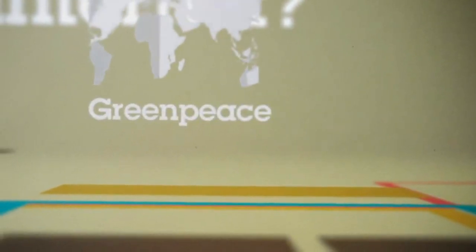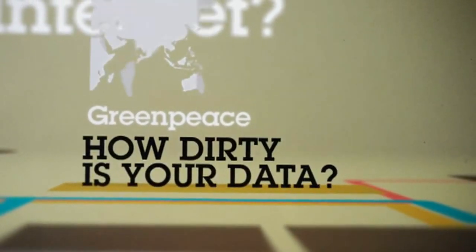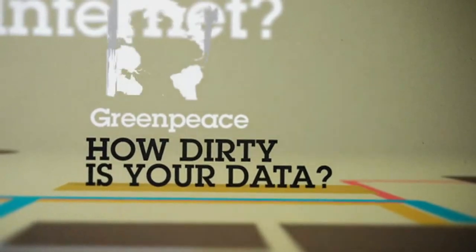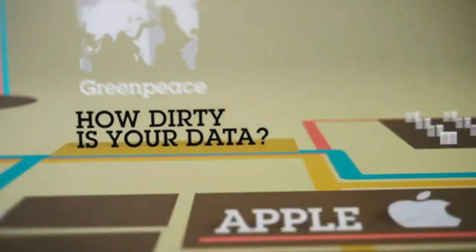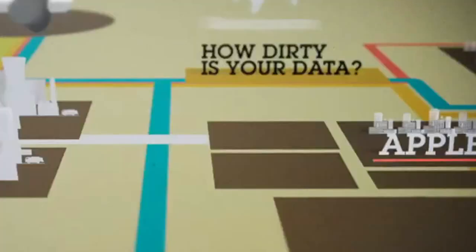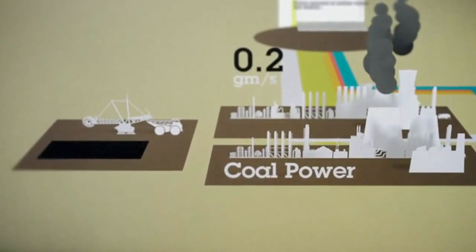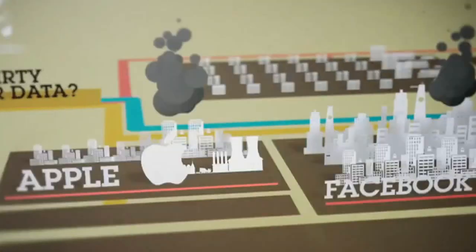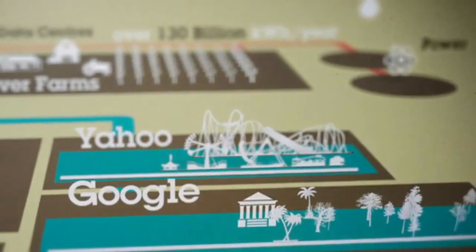Last month Greenpeace released a report called How Dirty Is Your Data? which concluded that the tech industry's brownest companies are Apple and Facebook, whose centres rely on coal-based electricity more than those of their rivals. The report ranked Yahoo and Google as the greenest.